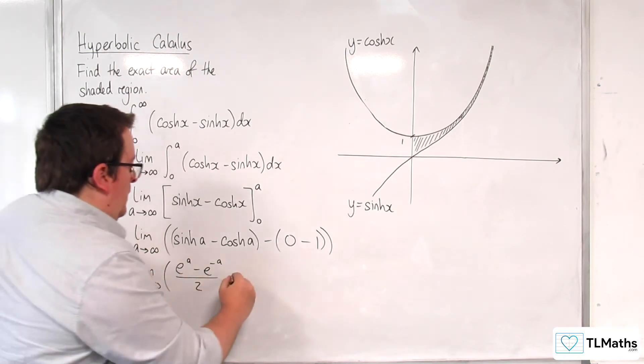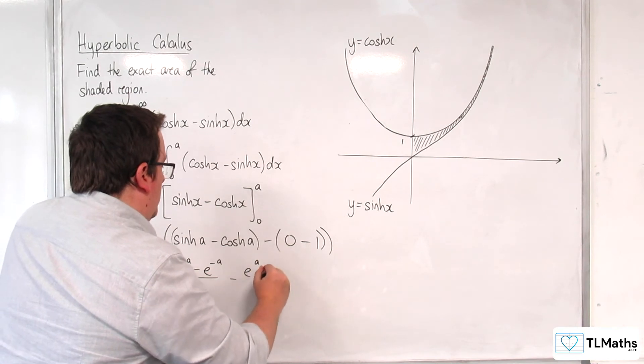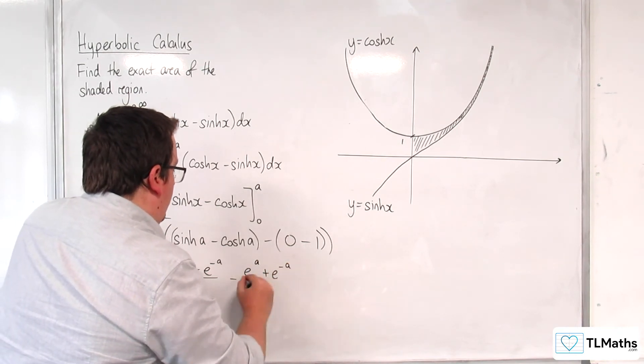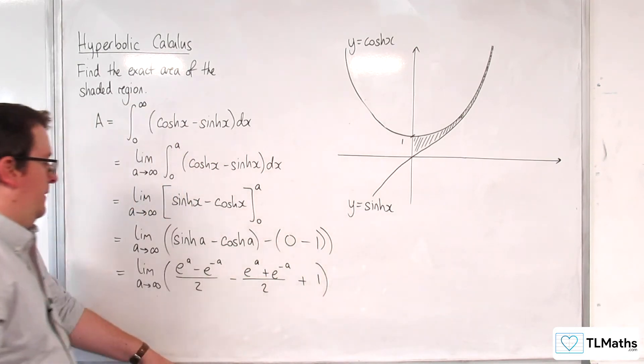And then I've got take away e to the a plus e to the minus a over 2, and I've got plus 1 on the end.